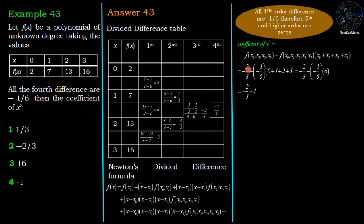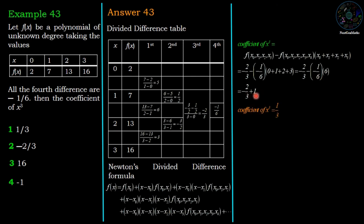Substitute the values: the third order difference is minus 2 by 3 minus the fourth order difference minus 1 by 6, times x₀ which is 0 plus 1 plus 2 plus 3. This equals minus 2 by 3 minus minus 1 by 6 times 6. So we have minus 2 by 3 plus 1, and the coefficient of x³ is 1 by 3. Therefore the final answer is first option: 1 by 3.